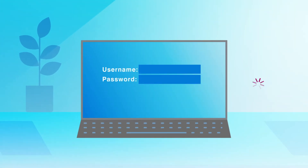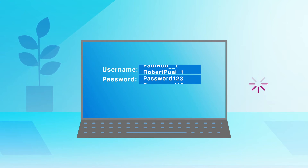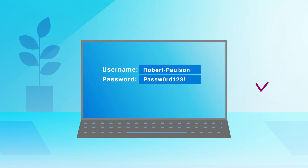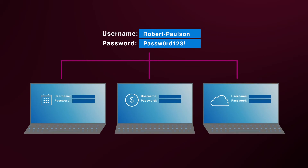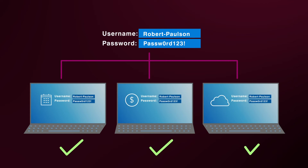In a brute force attack, the attacker tries a username and password combination across many accounts until one works. In a breach replay attack, also known as credential stuffing, an attacker uses leaked credentials from one account on another one. This works because many people use the same password on multiple accounts.